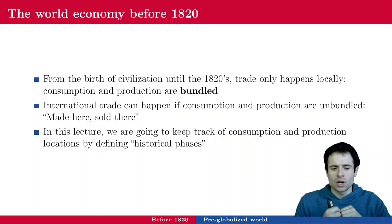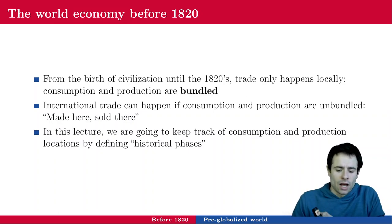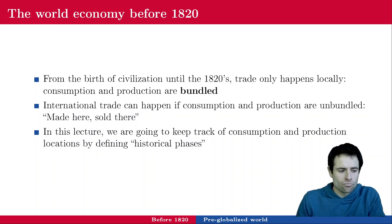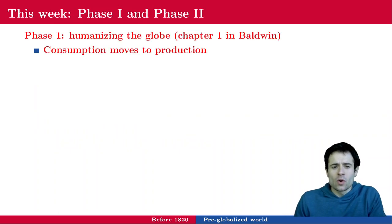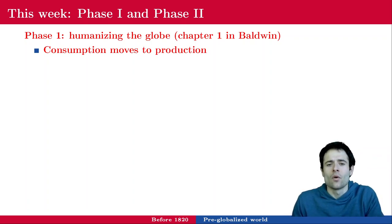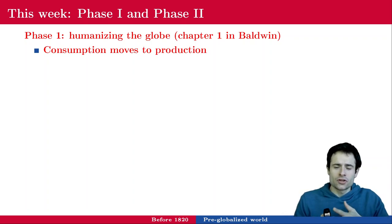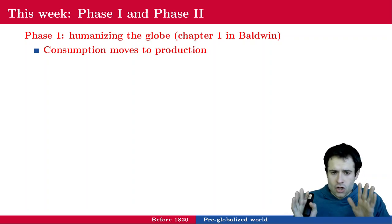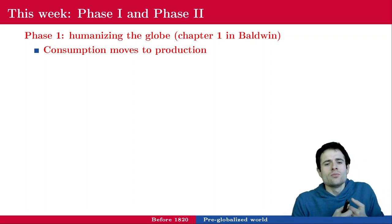In this lecture, we are going to keep track of consumption and production using some historical phases and describing particular events that triggered the transition between phases. This week we are going to go over two phases out of four. The first one is about humanizing the globe — this is the first chapter in Baldwin's book, The Great Convergence — where consumption moves to production.